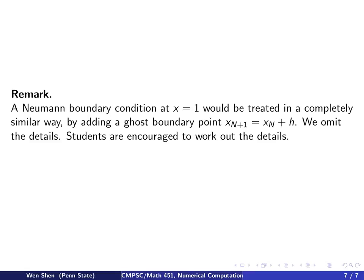A final remark: if I have a Neumann boundary condition also at x = 1, it can be treated in a completely similar way. You will have to add a ghost boundary point x_{N+1} = xN + h. We will not provide the details here. We encourage students to work out the detail and be comfortable with it.